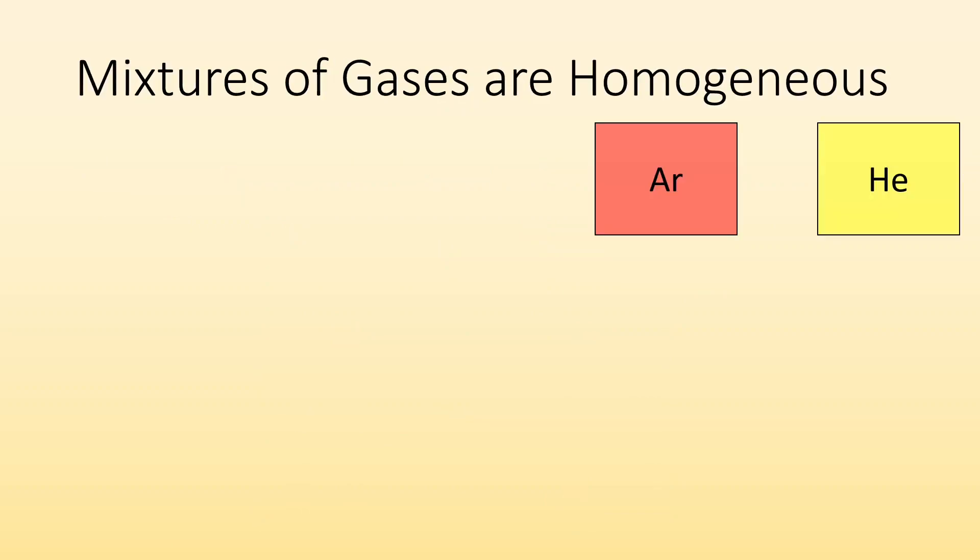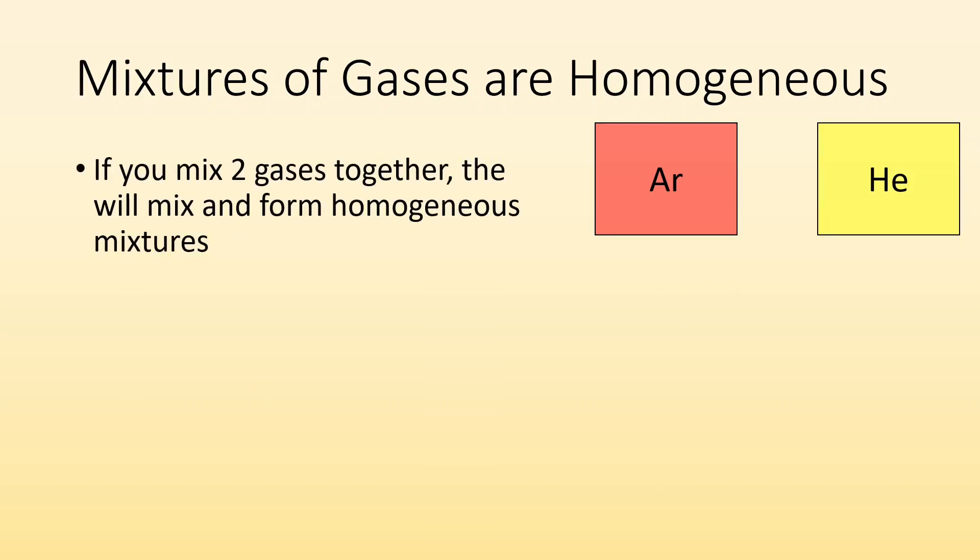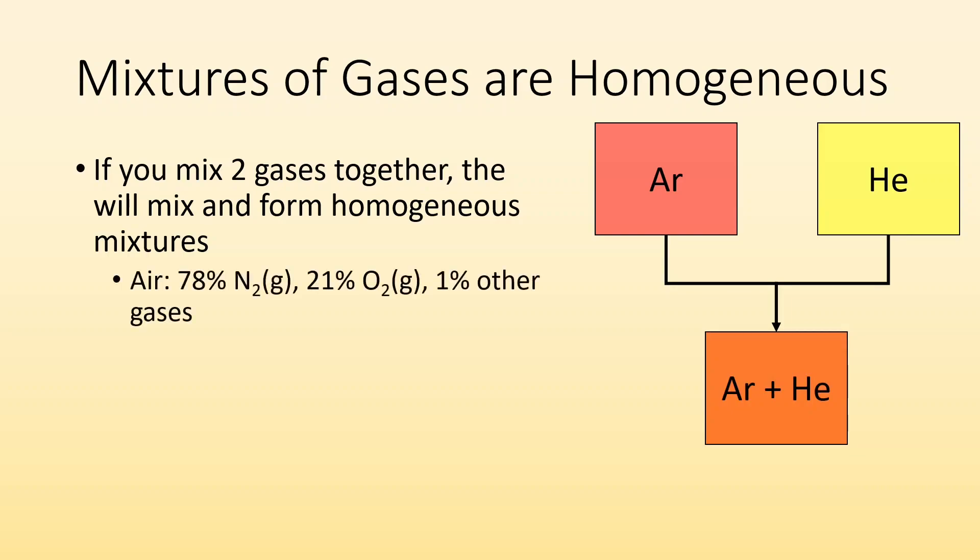Mixtures of gases are homogeneous meaning that if you take two gases and you mix them together they're going to mix and form homogeneous mixtures. They're going to be the same throughout. So if I had some argon some helium and mixed them together I'm going to get a nice even homogeneous mixture. The air that you're breathing right now is a homogeneous mixture of different gases. We got nitrogen that's like 78 percent of it. Oxygen is roughly 21 percent of it and then there's one percent of a bunch of other gases that make up the rest of the air that you're breathing right now.